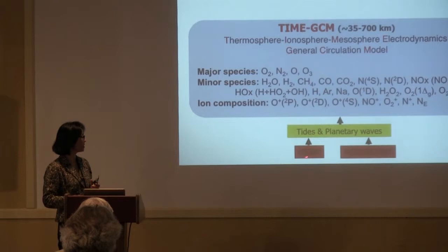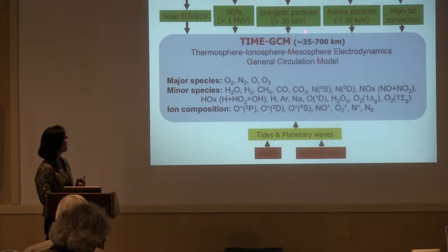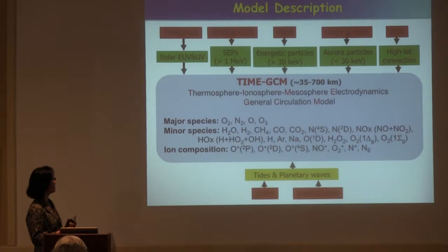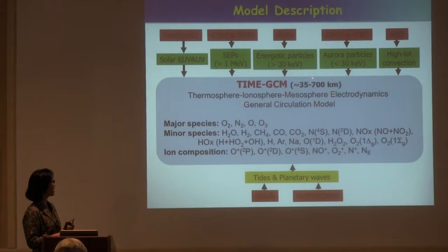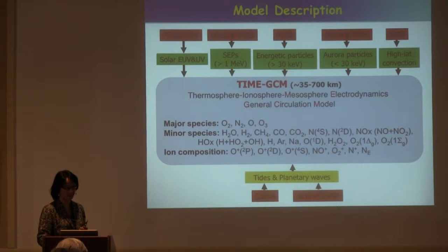The lower boundary of TIEGCM considers tides and planetary waves from an empirical model, a global scale wave model, or from real analysis data from NCEP and ECMWF. On the upper boundary, it inputs various solar energy particles, aurora particles, and high-latitude convection, because the energy input from the magnetosphere is one of the major drivers of thermosphere dynamics. We are using more primary data to specify those inputs, and for aurora and high-latitude convection, we primarily use AMIE processes to give a more realistic description.